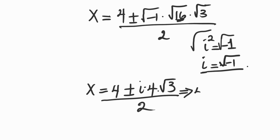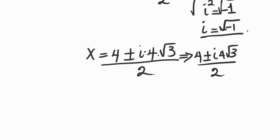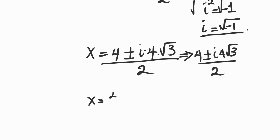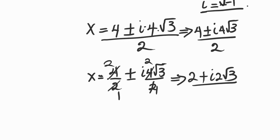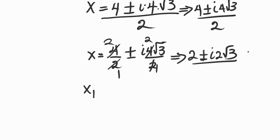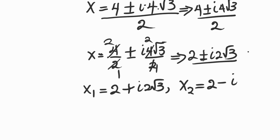This becomes 4 plus or minus i times 4 root 3, all divided by 2. Splitting the fraction: 4 divided by 2 is 2, and 4 root 3 divided by 2 is 2 root 3. So we get 2 plus or minus i times 2 root 3. Therefore x1 equals 2 plus 2i root 3, and x2 equals 2 minus 2i root 3.